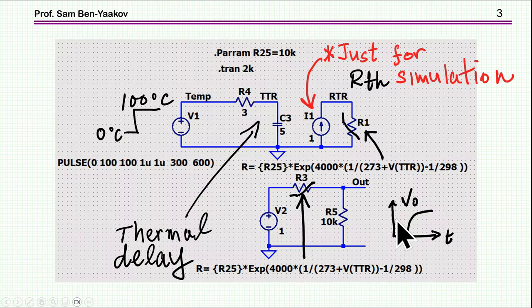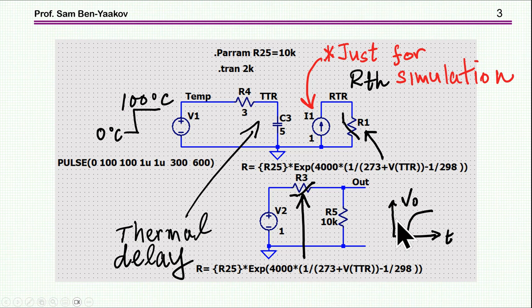So let me first of all show a simulation of the model of the thermistor itself. Here we have the temperature represented by a voltage source, and here I'm assuming a step between 0 and 100 centigrade. This is the thermal part. This is the thermal resistance and this is the thermal capacitance of the thermistor itself. So this is the outside temperature and this is supposedly the temperature within the thermistor itself. Now this model is very simple, it's a single unit, it's a lumped type of model.